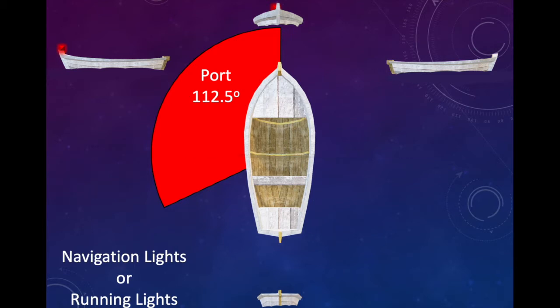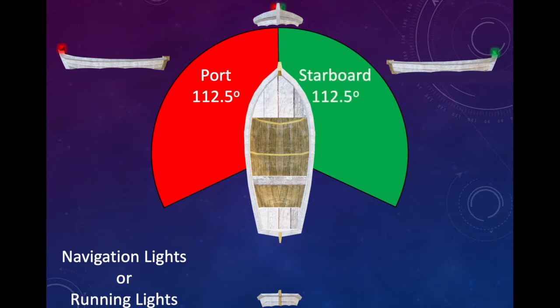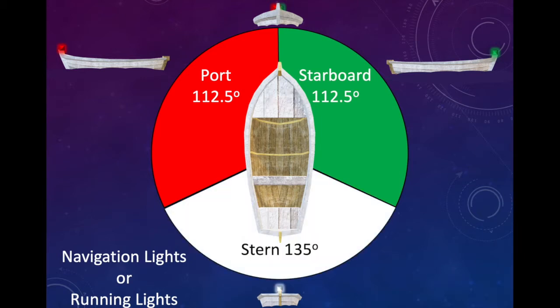On the starboard side, we're going to see its reciprocal in green. This is 112 and a half degrees as a green colored light. Coming in at the stern, we have a white light showing 135 degrees. This vessel is now visible regardless of which angle you look at it.